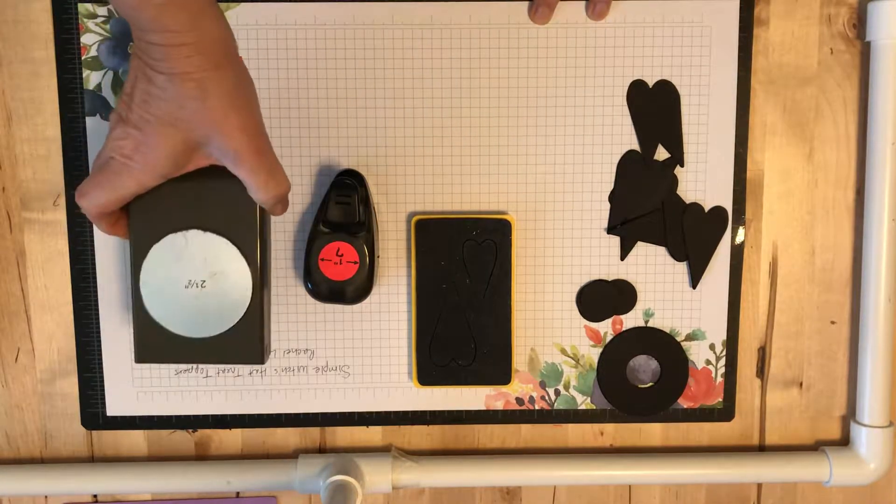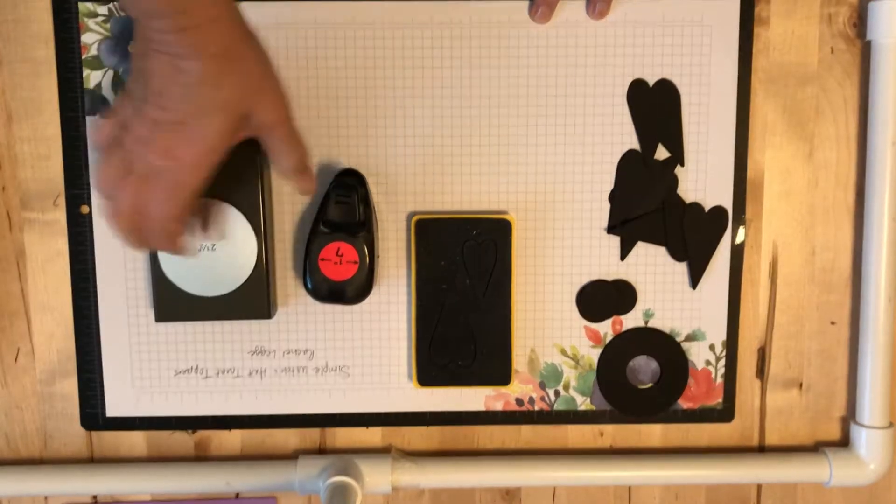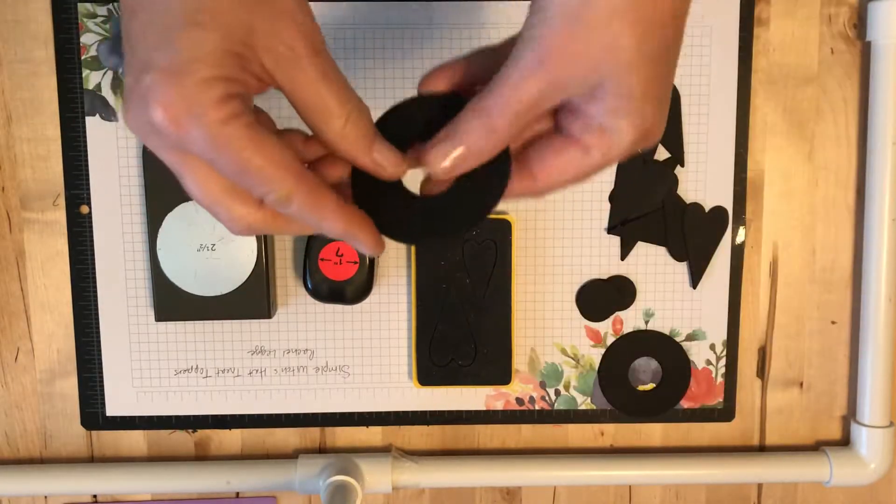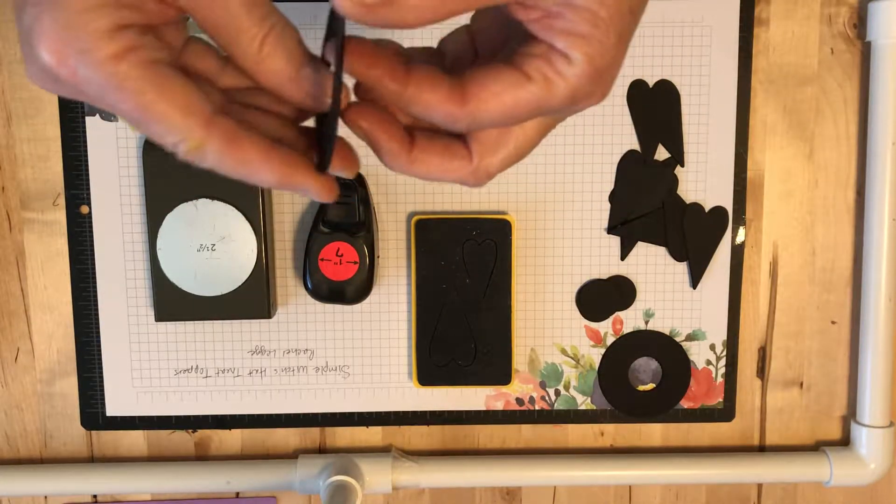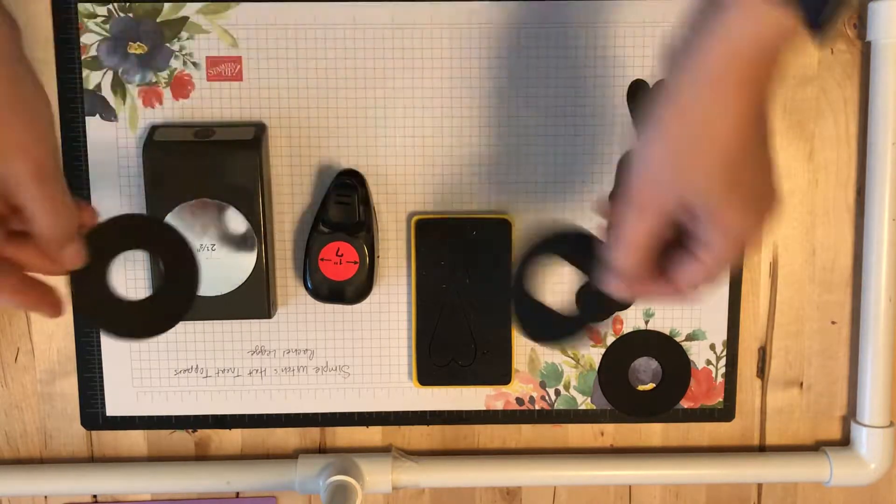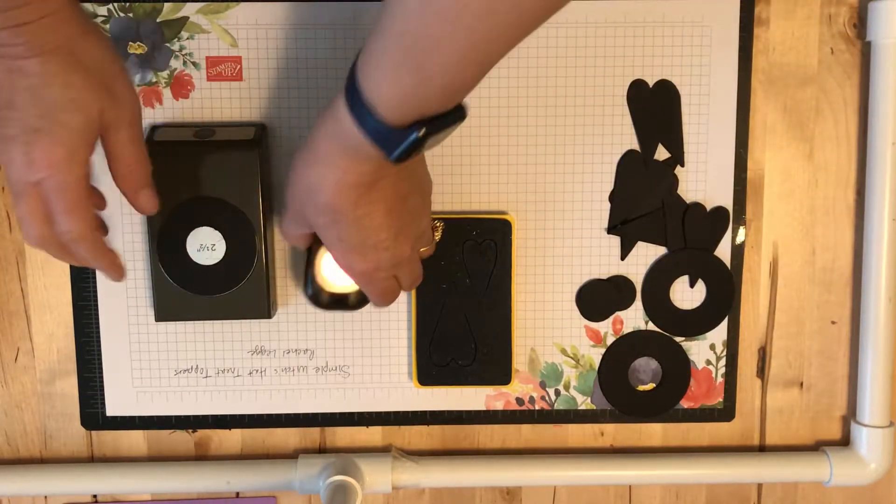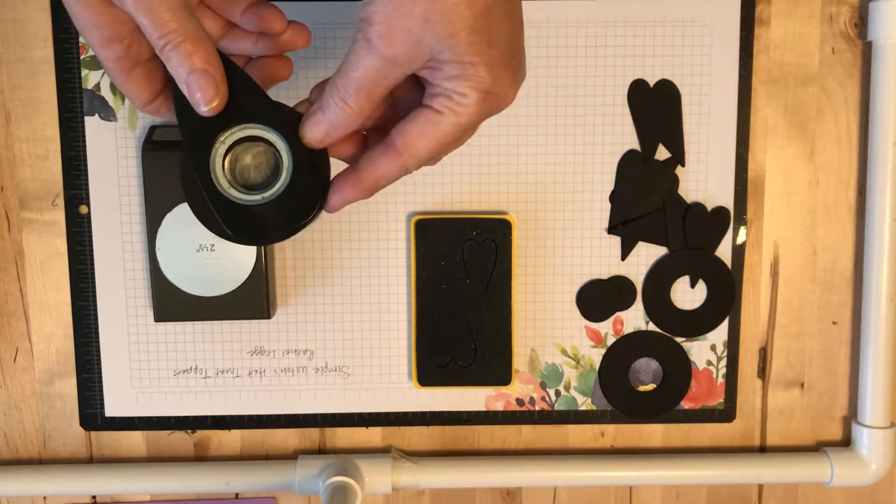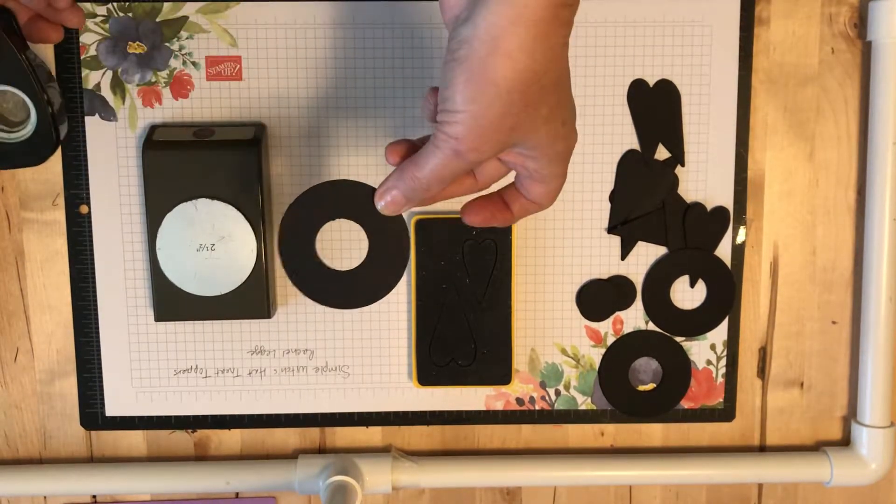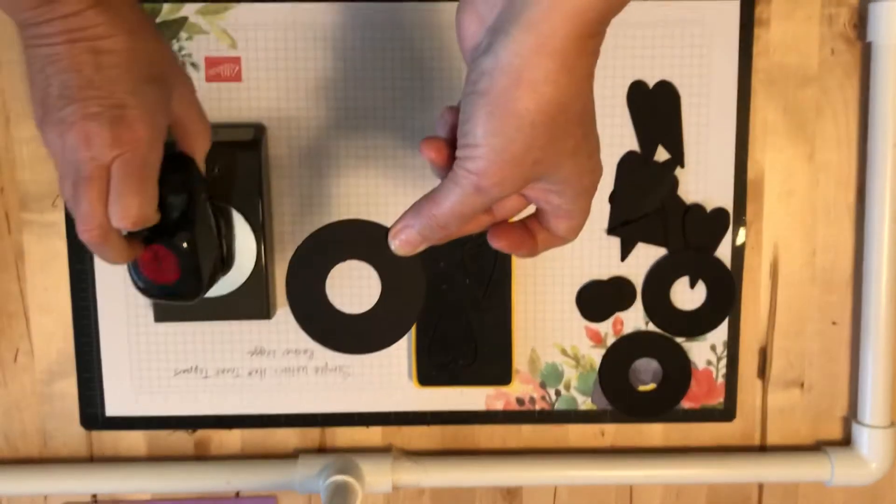Basically you take a two and a half inch circle punch and you punch out with black paper as I've done these already, and then you take your one inch circle punch and just punch a hole out of the middle so you wind up with something kind of like a donut.